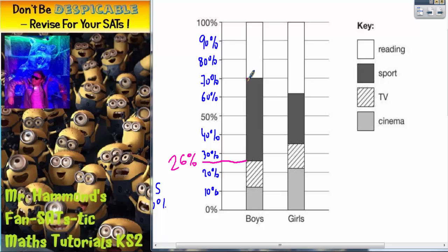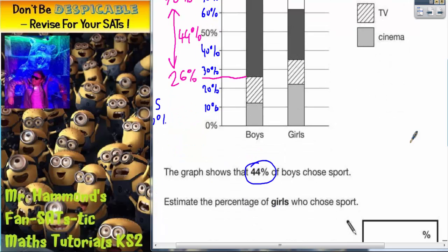The boys' sport bar ends here, and that is level with 70%. So, the gap between 26% where it starts and 70% where it ends must be the percentage of boys. And 70 take away 26 is 44%, which is why they've got 44% here.